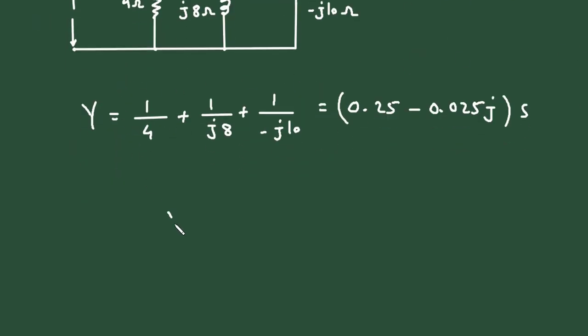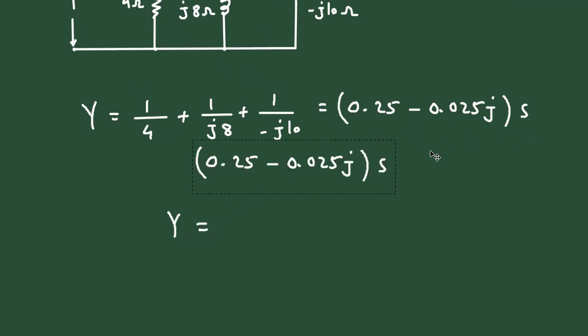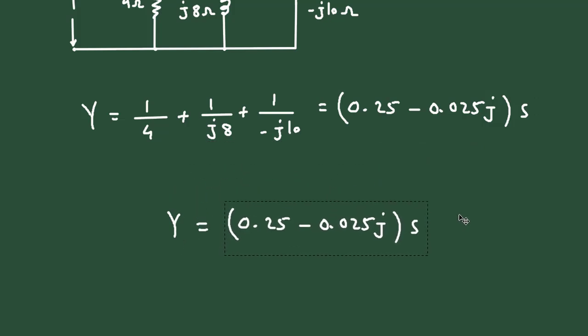So here we can write y is equal to this value. This is how we can find the admittance of the circuit.